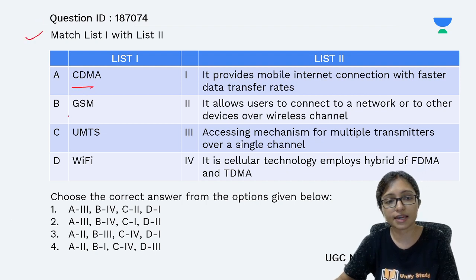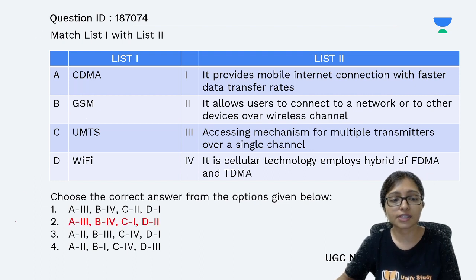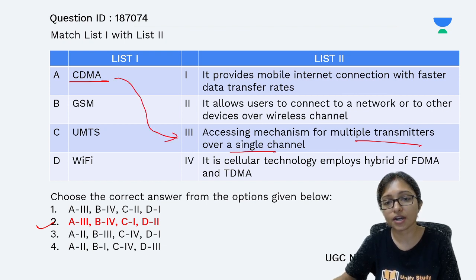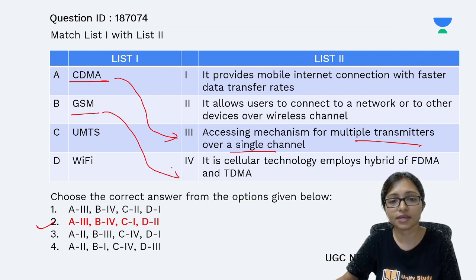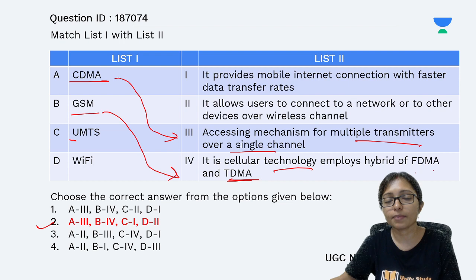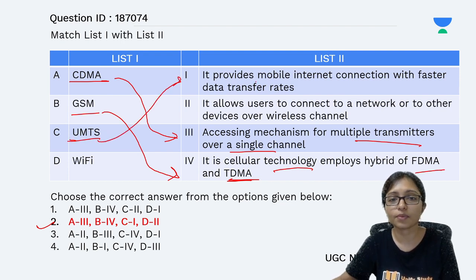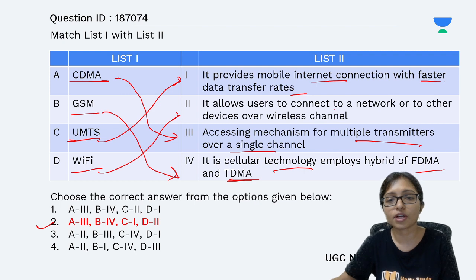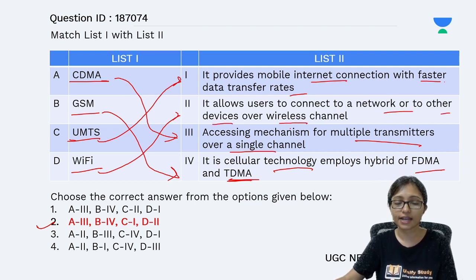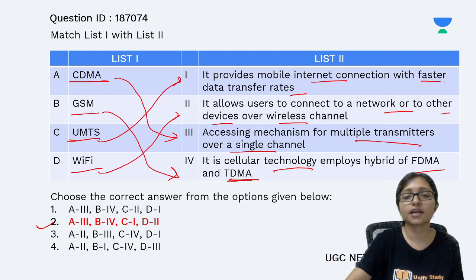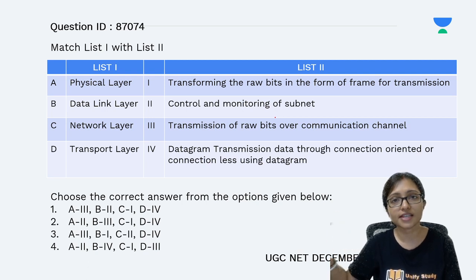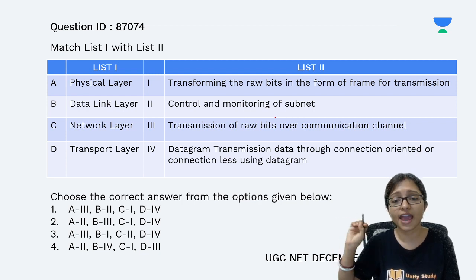The first question was a matching question with CDMA, GSM, UMTS, and Wi-Fi. CDMA means accessing multiple transmitters over a single channel. GSM uses TDMA and is one type of cellular technology — both FDMA and TDMA apply. UMTS provides mobile internet connection with faster data transfer rate. Wi-Fi allows networking of devices over a wireless channel. We did all these questions just two days ago in our networking marathon class — all four networking questions came exactly the same.